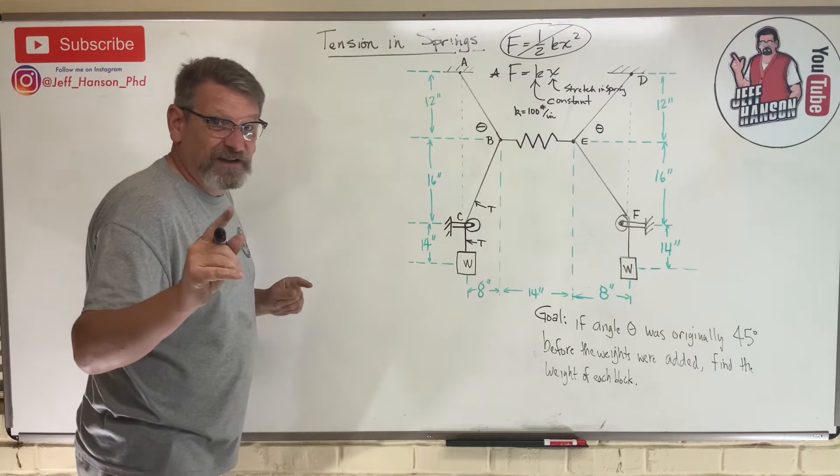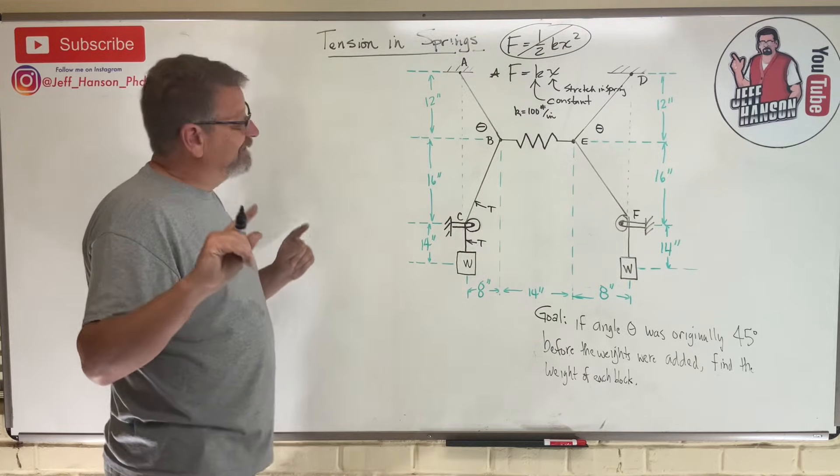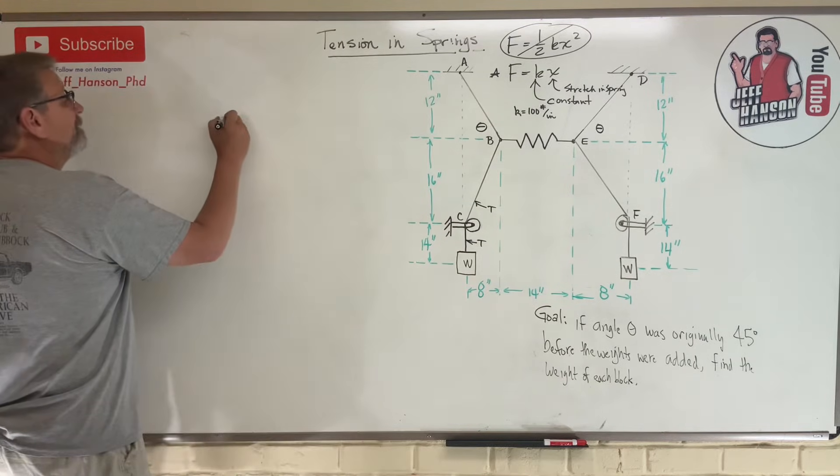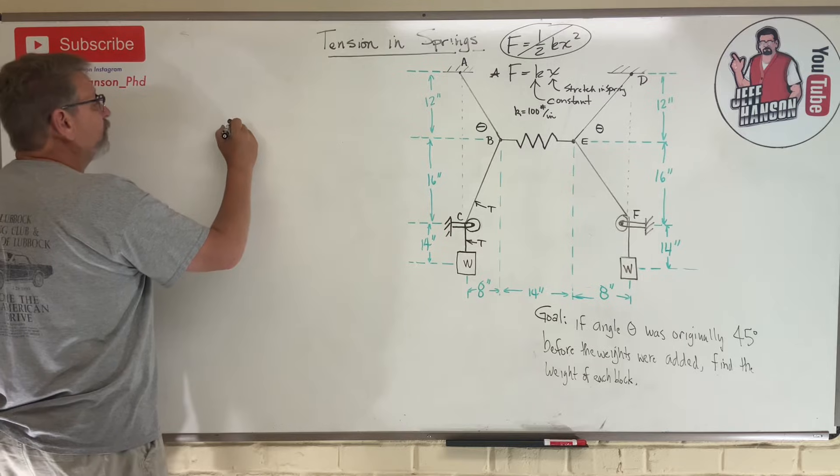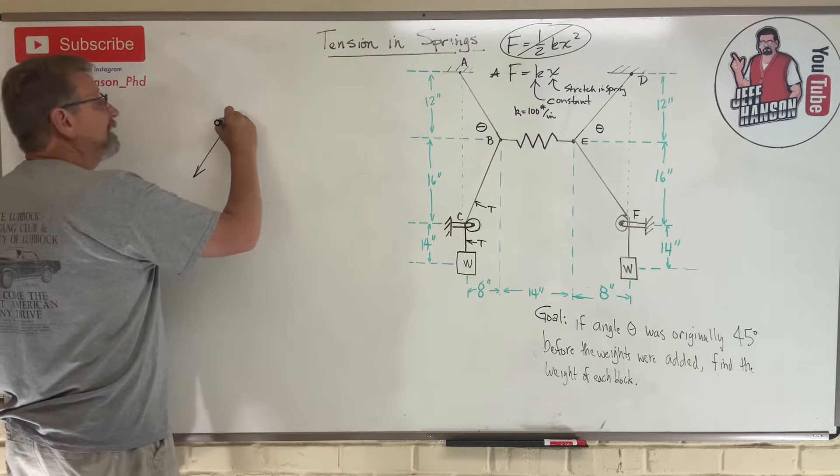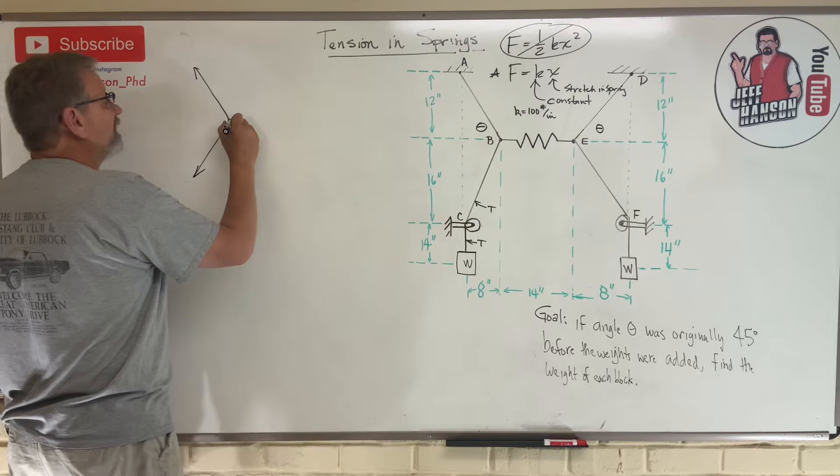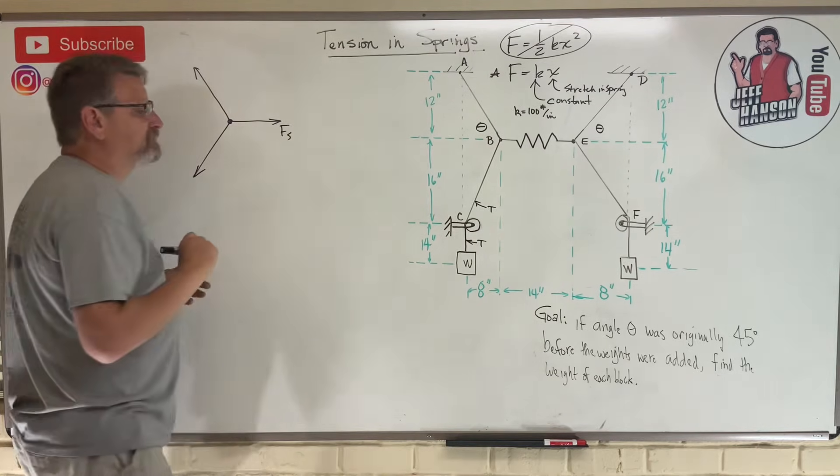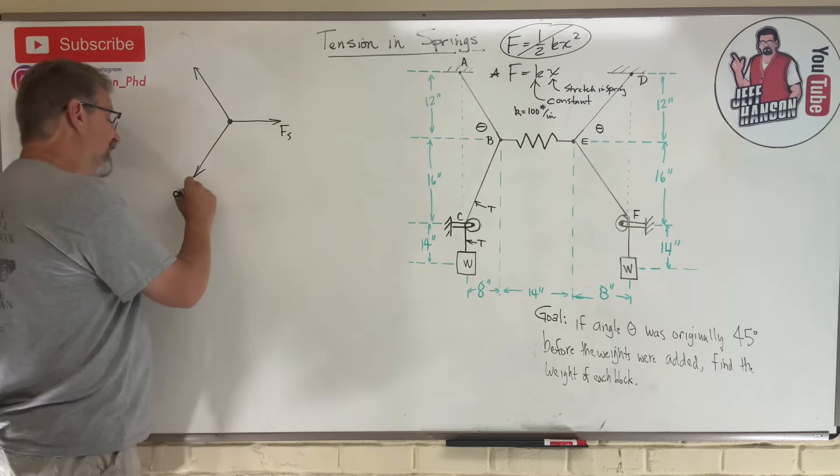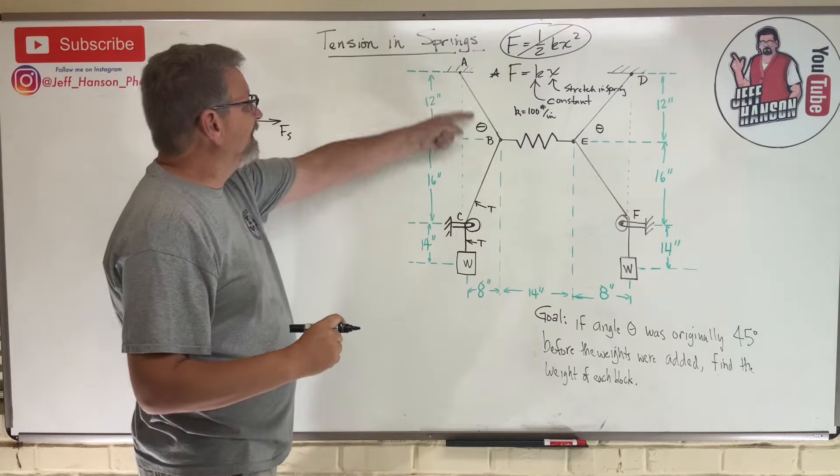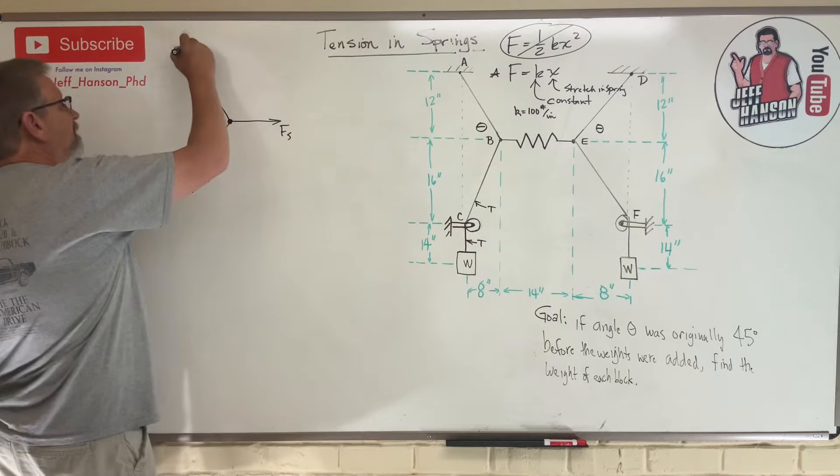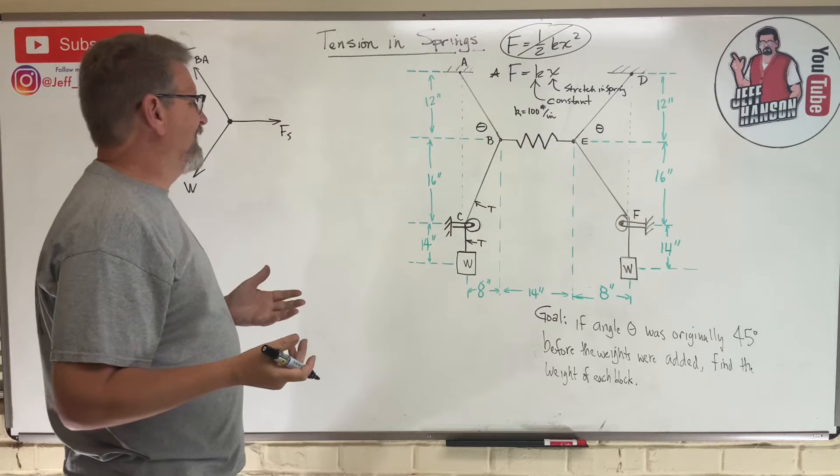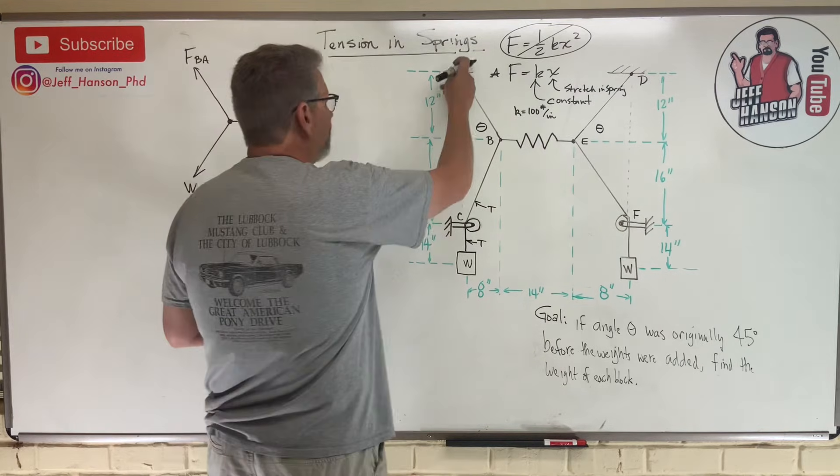If you're smart, pause the video and work it along with me, skip to the end and see if you get the same answer I do. Joint B, what's going on? I've got cables attached to me and I know that cables can only pull. I'm going to call this guy Fs for force of the spring, I'm going to call this guy w, and I'll call that guy Fba.